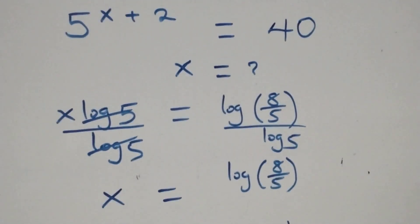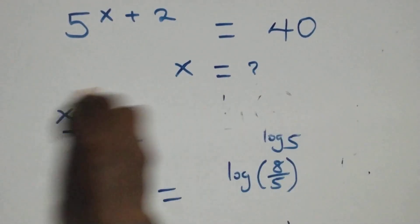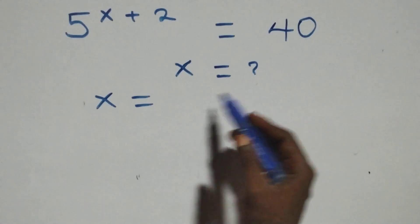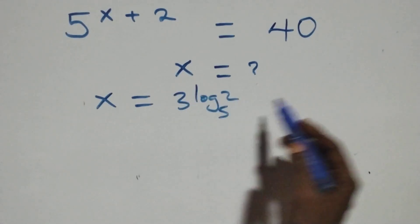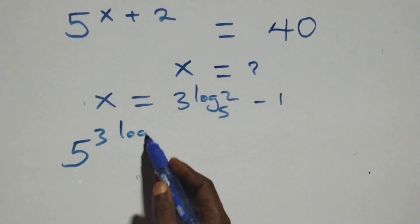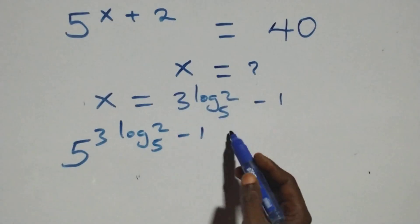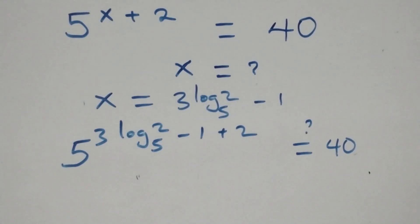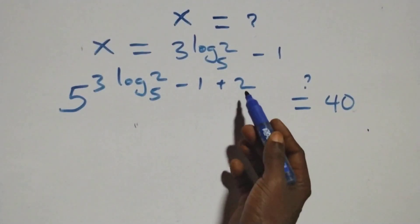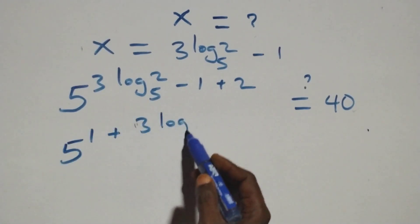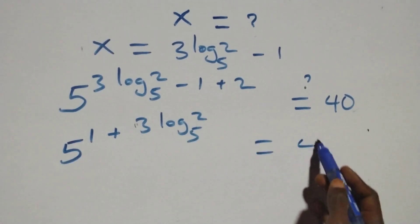Let's check if this satisfies the given problem. We substitute the value x equals 3 log₅2 minus 1 back in. What we have becomes 5 raised to power (3 log₅2 minus 1) plus 2 equals 40. The exponent minus 1 plus 2 gives 1, so this becomes 5 raised to power (1 plus 3 log₅2) equals 40.